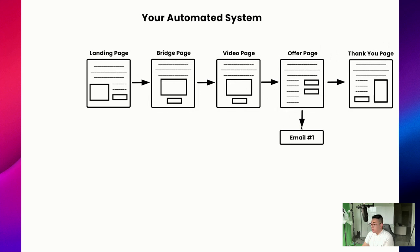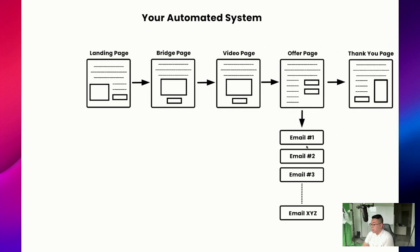You just leverage the power of the system. If they don't buy, the system sends email number one, email number two — as many emails as it takes until eventually they make their purchase. That's how you can get your $900 sales on autopilot without being on sales calls, without chasing people down because this automated system is working for you. From a glance, this is what it takes to build your automated system: landing page, bridge page, video page, offer page, and so on.